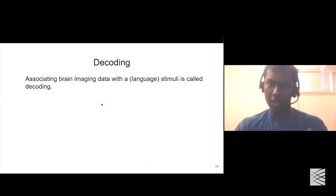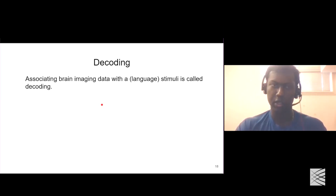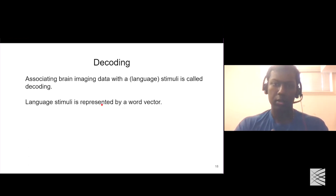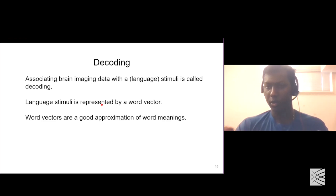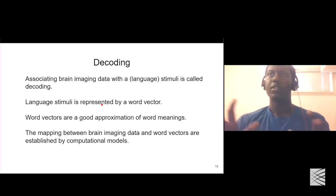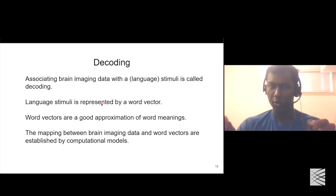Now we have an understanding of why we need to transform text into word vectors and how we can record the brain. We'll now use these two concepts and move on to decoding, where we actually connect the two components. Decoding is simply a process of associating the brain imaging data with any kind of stimuli — in this case language, but it can also be images or auditory signals.